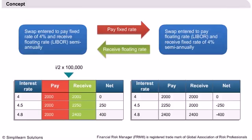Now they mutually agree and enter into a contract so that the person receiving a fixed payment will pay this fixed payment to the person receiving the floating payment. And in return, the other person will pay the floating payment to the first person. The net payment is shown in the chart. Therefore, the contract enables both parties to interchange their cash flow liability.